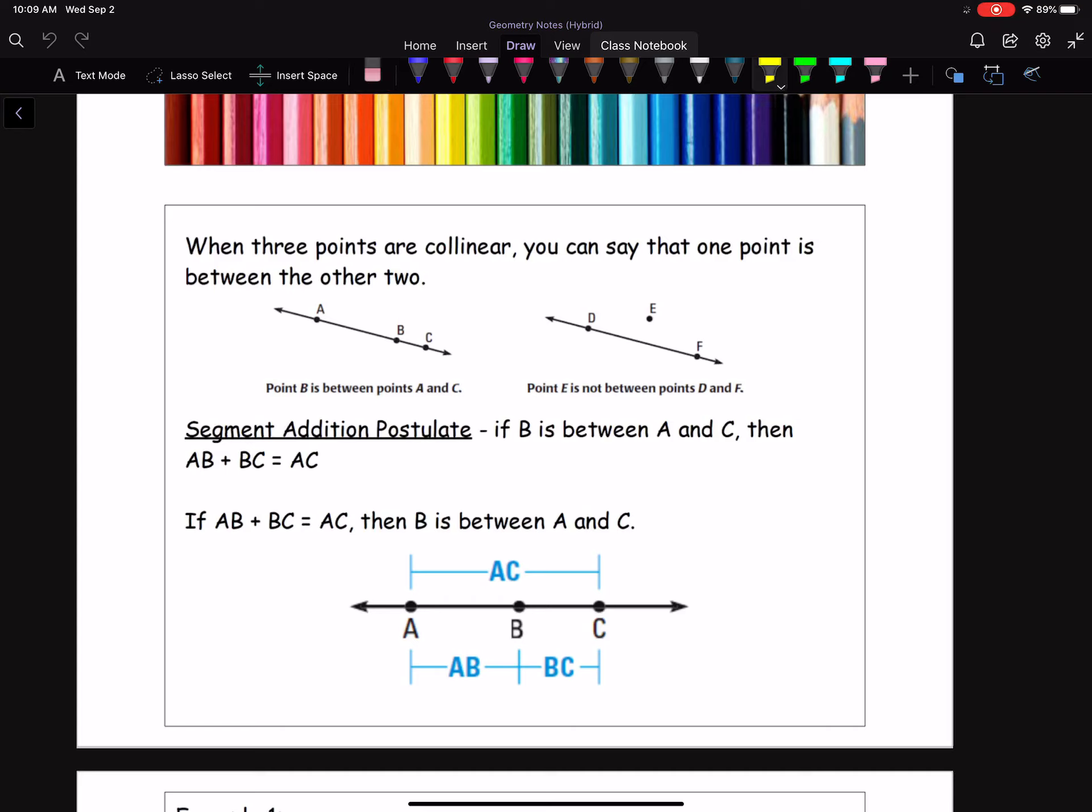When three points are collinear, so here's that vocabulary coming right back at you. Three points are on the same line. You say that one point is between the other two. Now, if that's not the best fact you've heard all day, then I don't know what is.